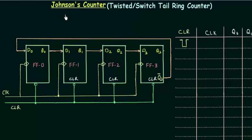In the last presentation we completed the ring counter — we saw the circuit, formed the table, and also saw the waveforms. Now we will study another type of counter that we call the Johnson's counter, or twisted tail ring counter.